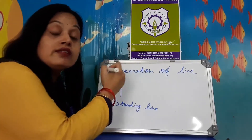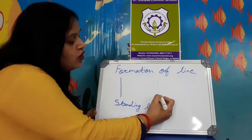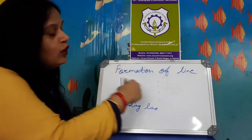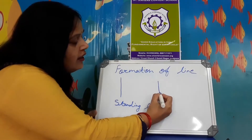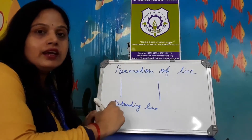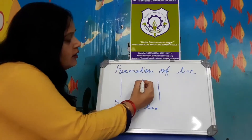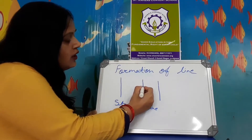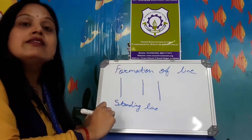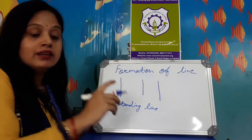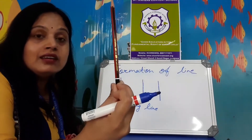How to draw a standing line? First, put the dot and you have to press it. Join this. Again — put the dot, join, join, join. This is a standing line. This pencil is a light standard.